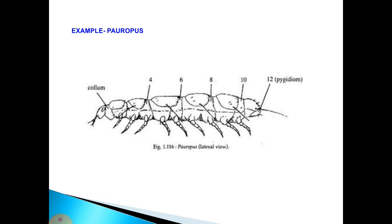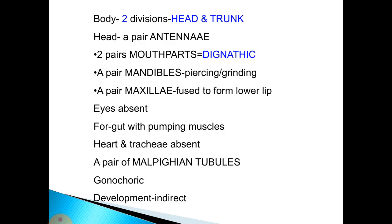In summary, Pauropoda has two body divisions — head and trunk — with paired antennae, two pairs of mouthparts in a gnathic condition: a pair of mandibles for piercing or grinding, and a pair of maxillae fused to form the lower lip. Eyes are absent. The foregut has pumping muscles; heart and tracheae are absent. A pair of Malpighian tubules is present. Development is indirect.